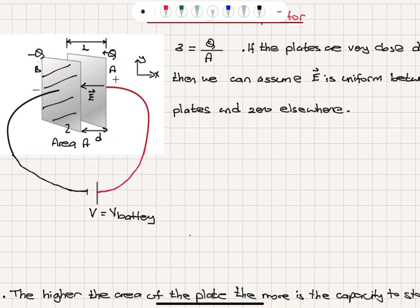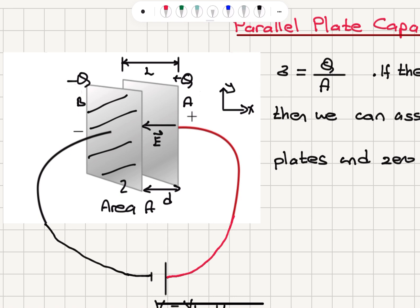Parallel plate capacitor. We will consider another important result when we have two conducting plates that are separated by a distance d. One carries a charge plus q, the other carries a charge minus q. The length of the conductor is l and it has surface area a. Since the charge is at the surface of a conductor, there will be a charge density q divided by the surface area a. I call the positively charged plate a and the negatively charged plate b.